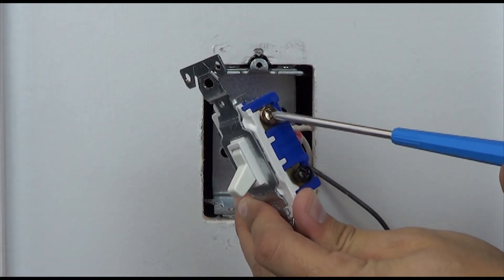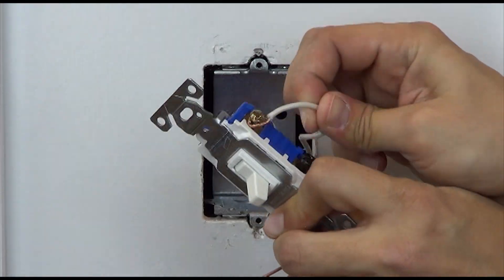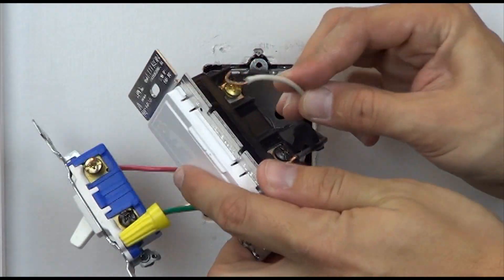Remove the other two wires from the switch and connect them to the remaining two screws on the dimmer. One to brass and one to blue.